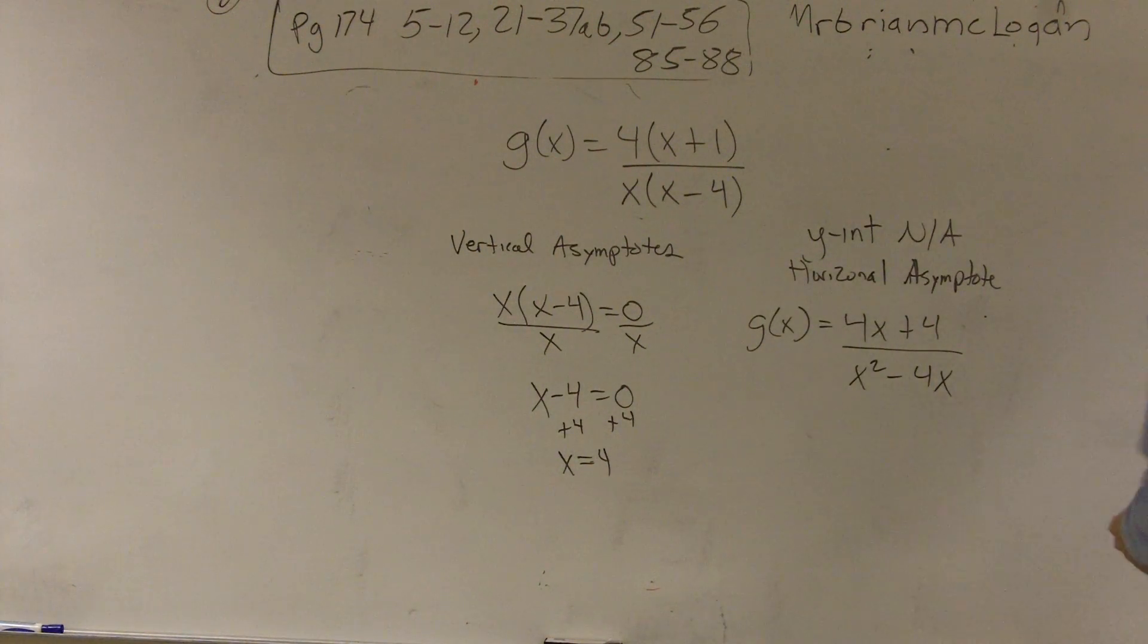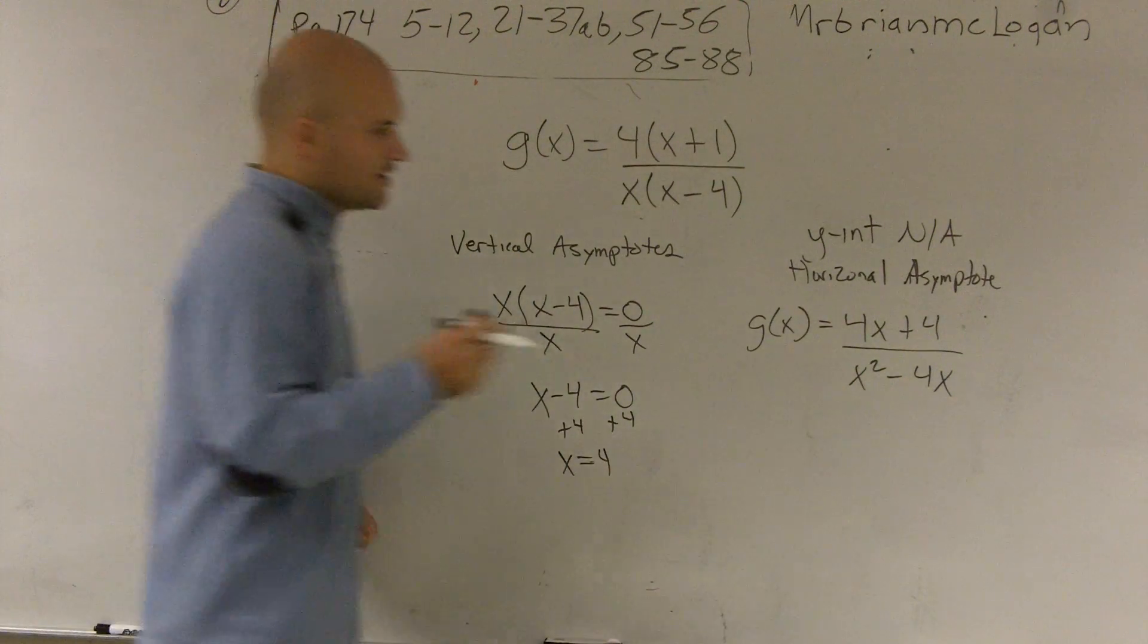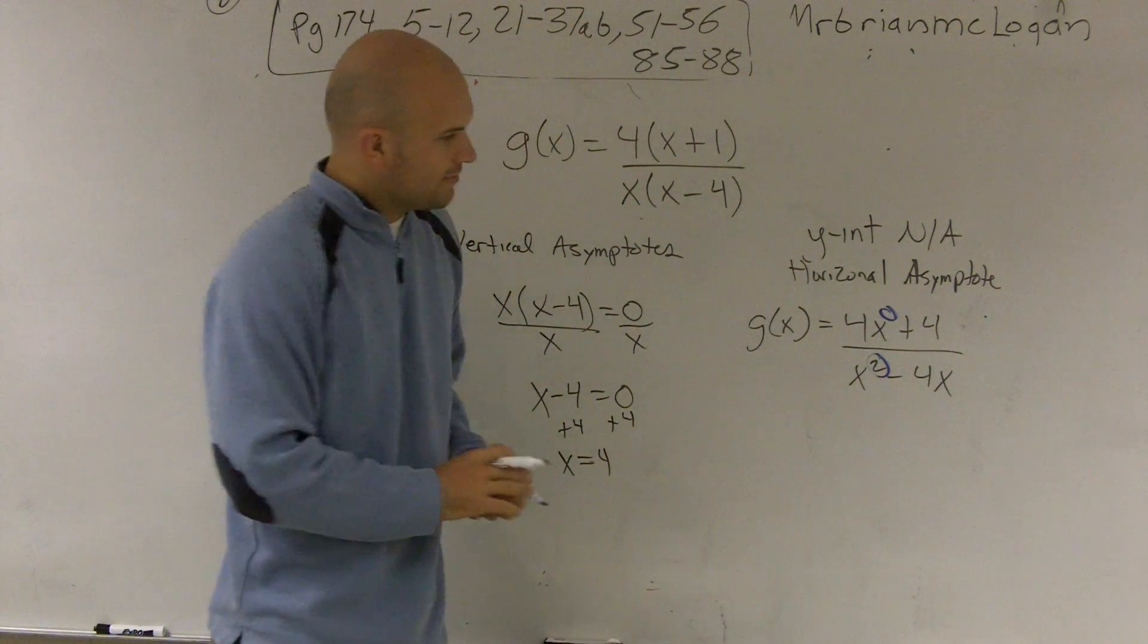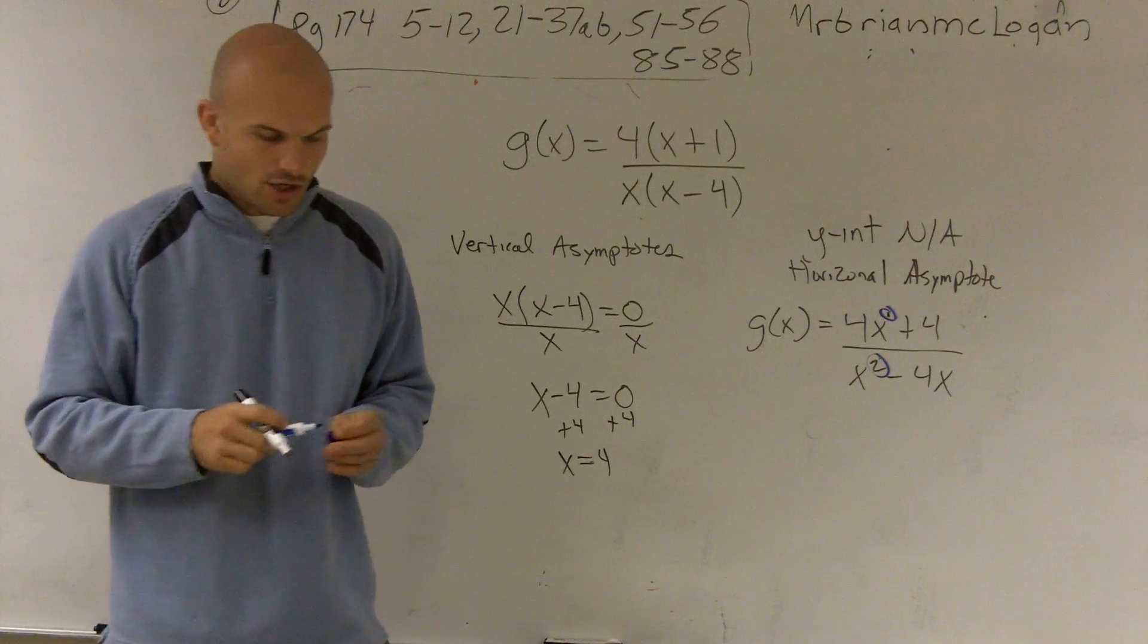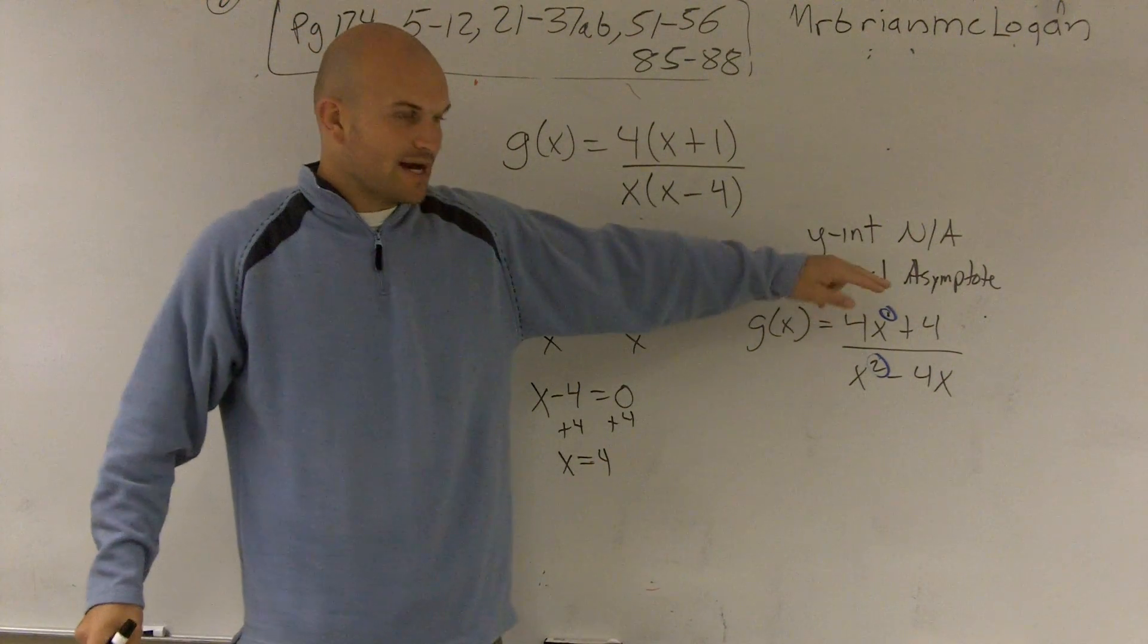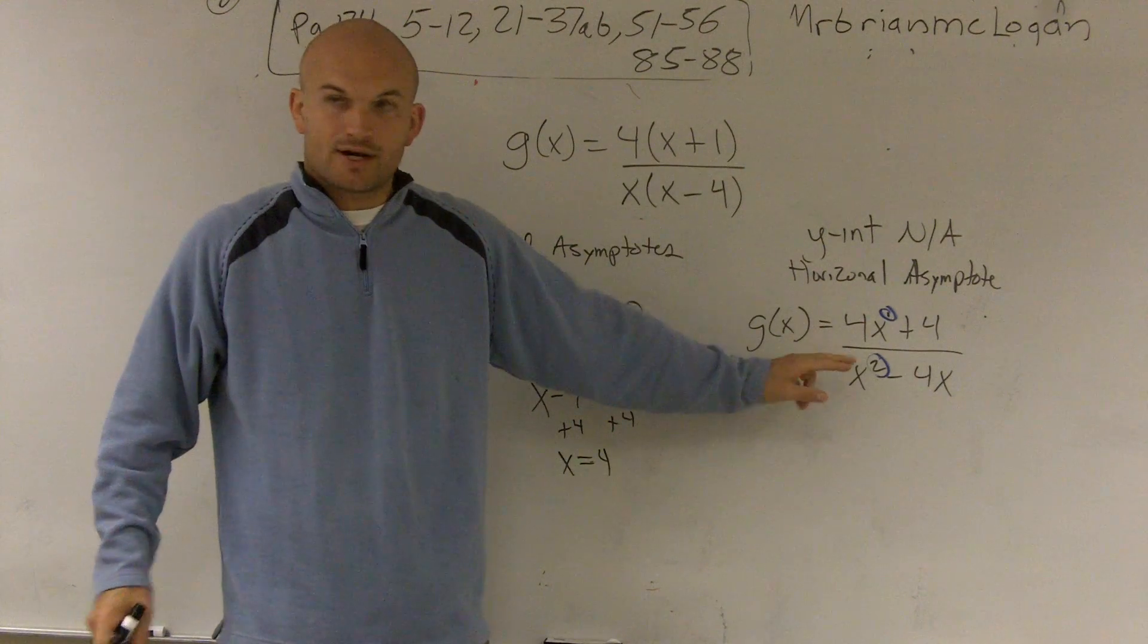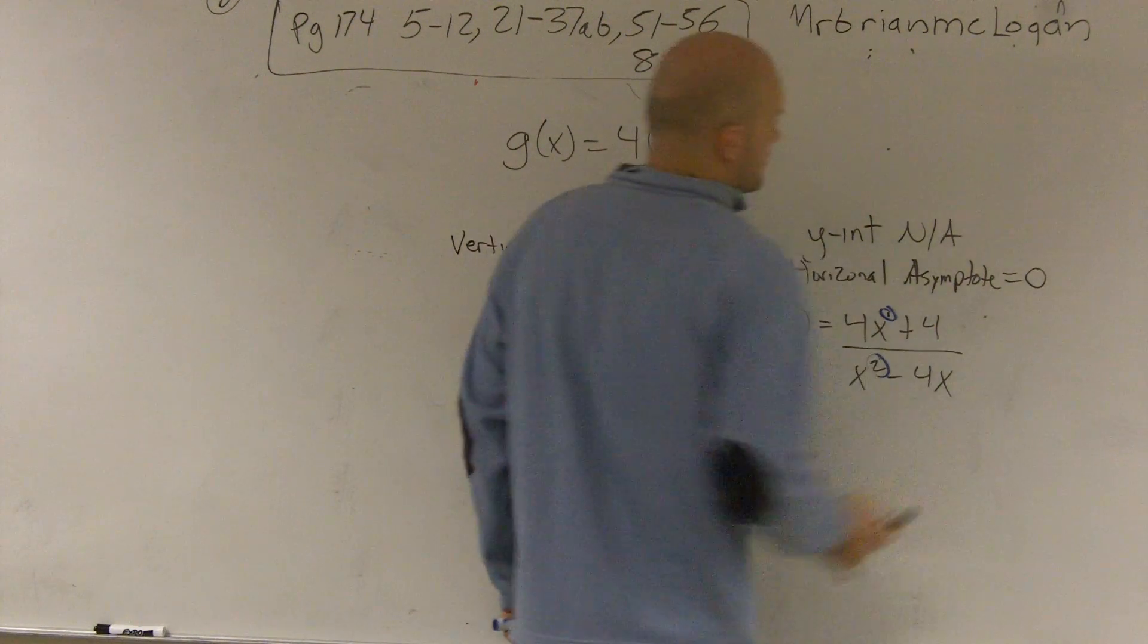So remember, when finding the horizontal asymptote, you need to look at the degrees of each polynomial. Well, this is actually going to have a 1 in front of there. So since my degree on my numerator is smaller than my degree in my denominator, my horizontal asymptote is going to equal 0.